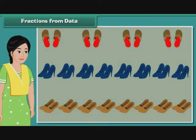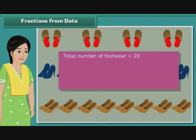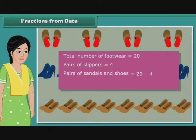Consider another example. Rishabh's mother owns twenty pairs of footwear. Out of these twenty pairs, four pairs are slippers and the rest are sandals and shoes. What is the fraction of sandals and shoes owned by Rishabh's mother? Total number of footwear is twenty. Pairs of slippers are four. Pairs of sandals and shoes are twenty minus four, which is sixteen. Therefore, the fraction of sandals and shoes is sixteen by twenty, which equals four-fifths.